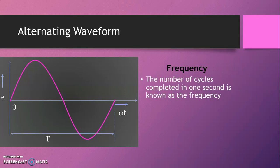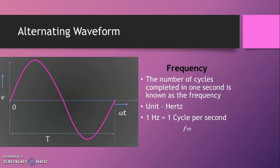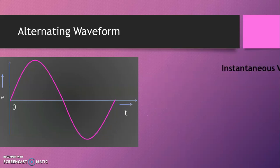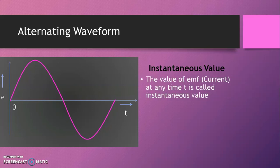Frequency: the number of cycles completed in one second is known as the frequency. The unit of frequency is the Hertz; one Hertz is equal to one cycle per second. Mathematically, frequency can be written as 1 divided by T, where T is the time period. So frequency and time period are inversely proportional to each other — if time period decreases, frequency increases, and vice versa.